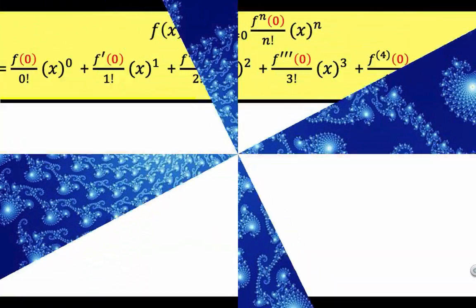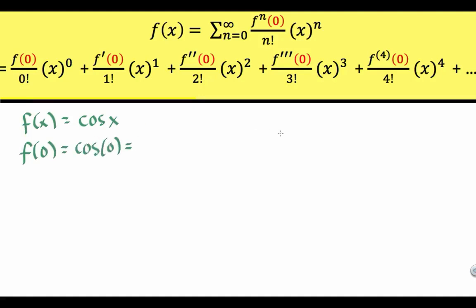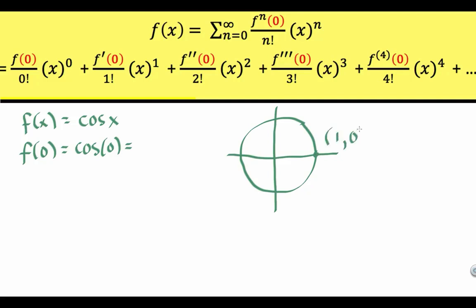So let's get back to the derivation. We need the values of f of 0, f prime of 0, f double prime of 0, and so on. Our f of x is cosine x, since this is the function whose Maclaurin series expansion we want to derive. We need f of 0, which is cosine of 0. To find cosine of 0, we go back to the unit circle. The angle 0 is at this location. At that point, the x-coordinate is 1 and the y-coordinate is 0. The x-coordinate is the cosine of the angle, so cosine of 0 is positive 1.